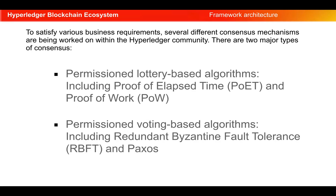There are many consensus algorithms that the Hyperledger community is working on to cater to various business requirements. Two major types of consensus are permissioned lottery-based algorithms and permissioned voting-based algorithms. Permissioned lottery-based algorithms have implementations such as Proof of Work and Proof of Elapsed Time, while permissioned voting-based algorithms include RBFT and Paxos.